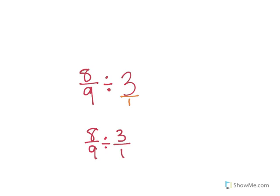And just what we talked about, we're going to keep this the same. Multiply reciprocal. So that means that my equivalent expression is going to be eight-ninths times one-third.